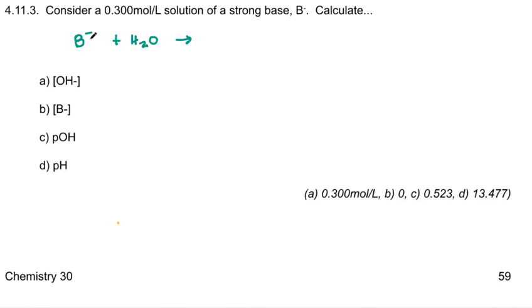B will do that thing bases do where they say, give me one of your hydrogens. So this forms HB. And the water is now stripped of one of its hydrogens and has become hydroxide. This making hydroxide is what makes us point at something and say that is a base.